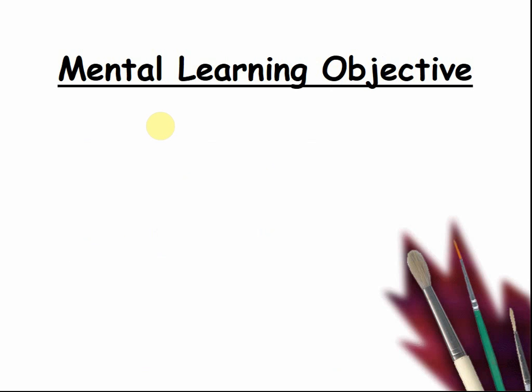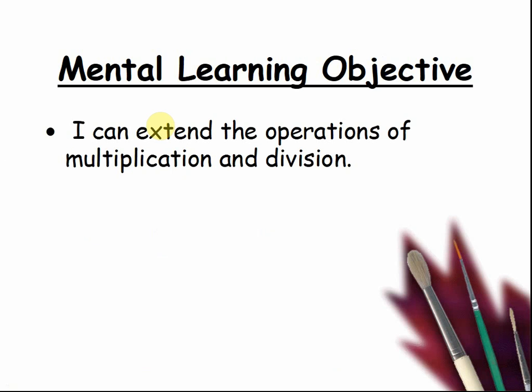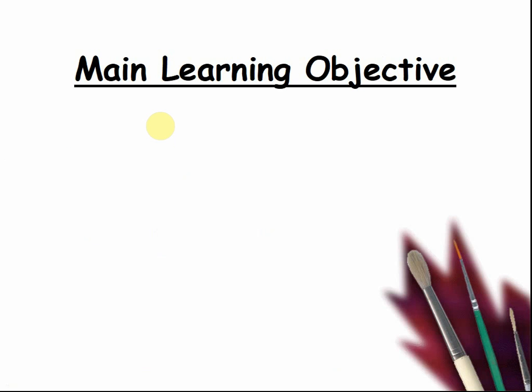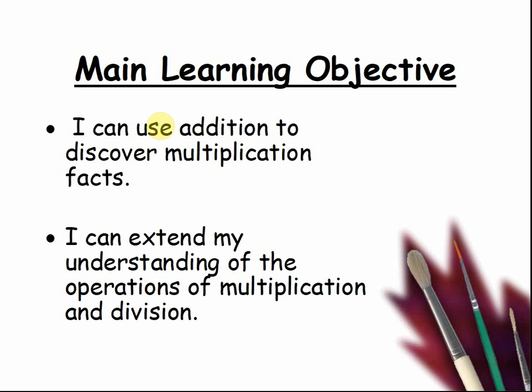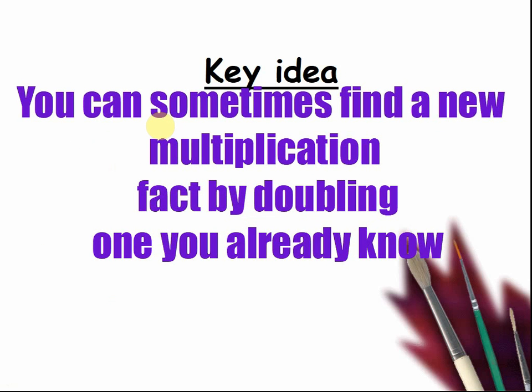Here's our mental learning objective: I can extend the operations of multiplication and division. Now we're looking at the main learning objective: I can use addition to discover multiplication facts, and I can extend my understanding of the operations of multiplication and division. You can sometimes find a new multiplication fact by doubling one you already know, which makes maths much easier to do. That is today's key idea.